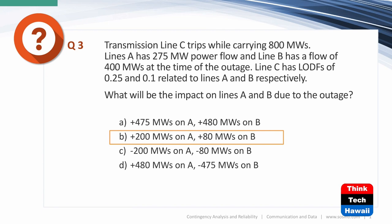The impact on line B: it's a 0.1 Line Outage Distribution Factor, so one-tenth of 800 megawatts is 80 megawatts. Notice that answer C is a detractor — it's the one that tricks you if you think the flow is being lost, but it's not. When you lose one of three parallel lines, that flow still has to find its way on the remaining lines since you haven't lost any load or source.